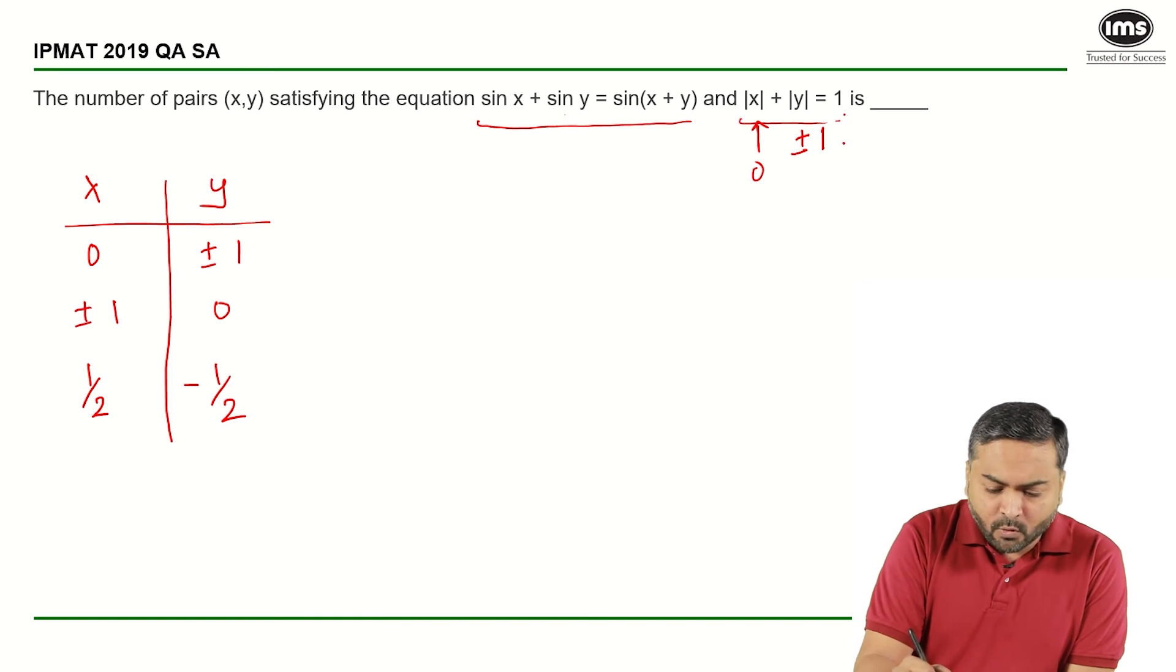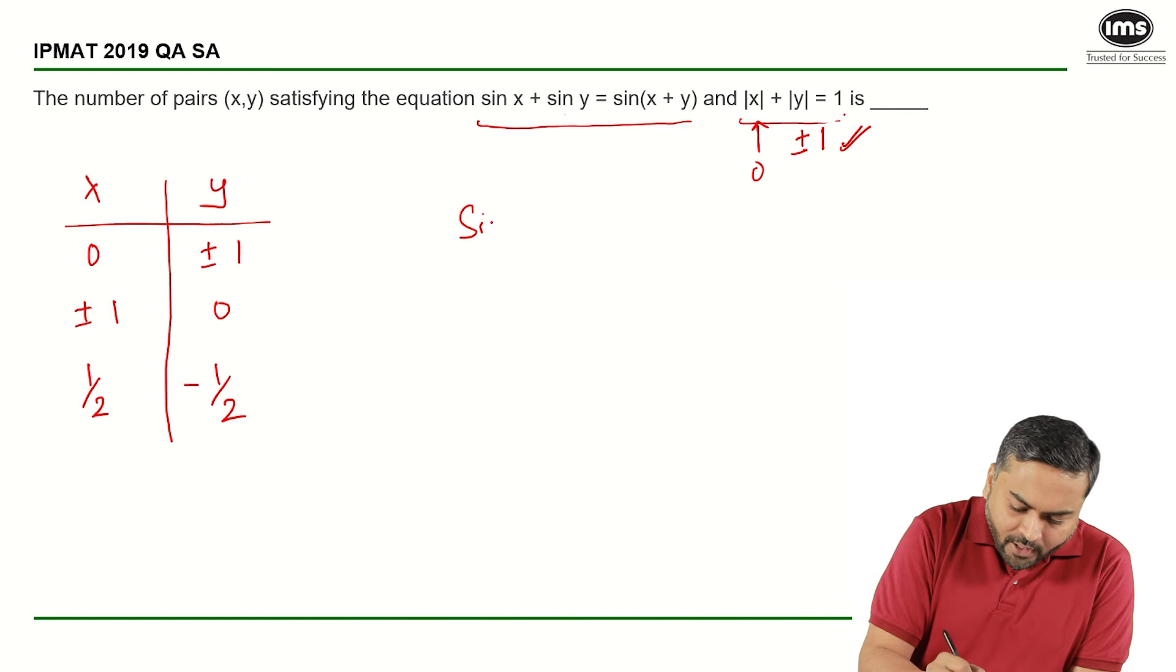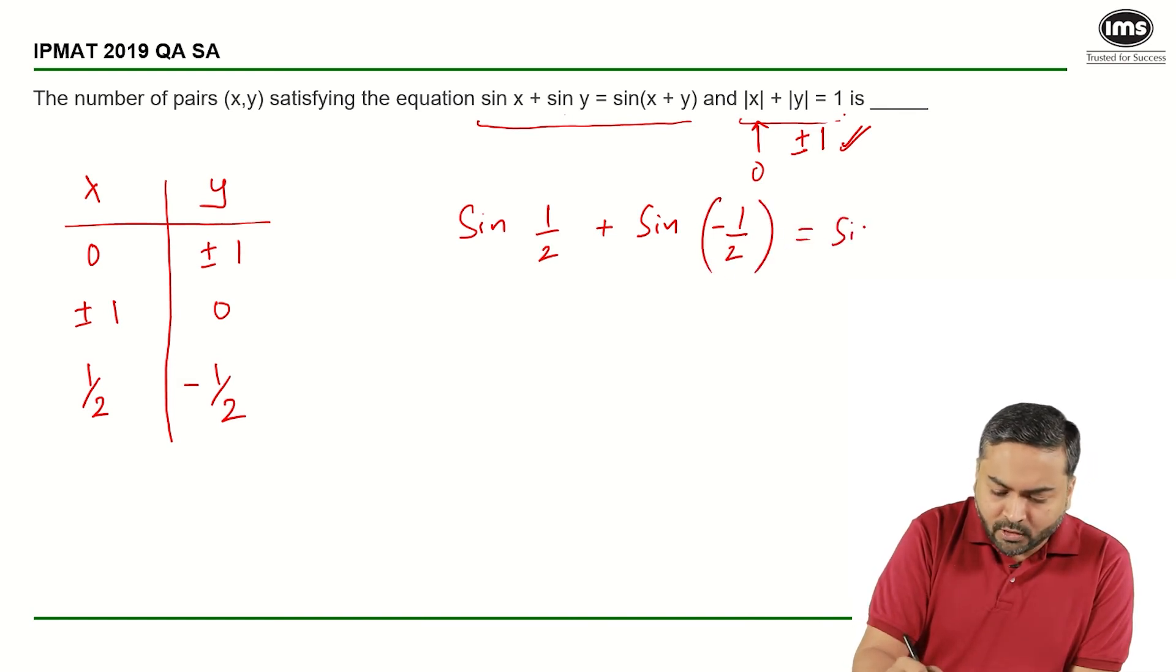This is still satisfying, this inequality still satisfies. What will happen here? I will have sin of half plus sin of minus half, and this will become sin of 0.